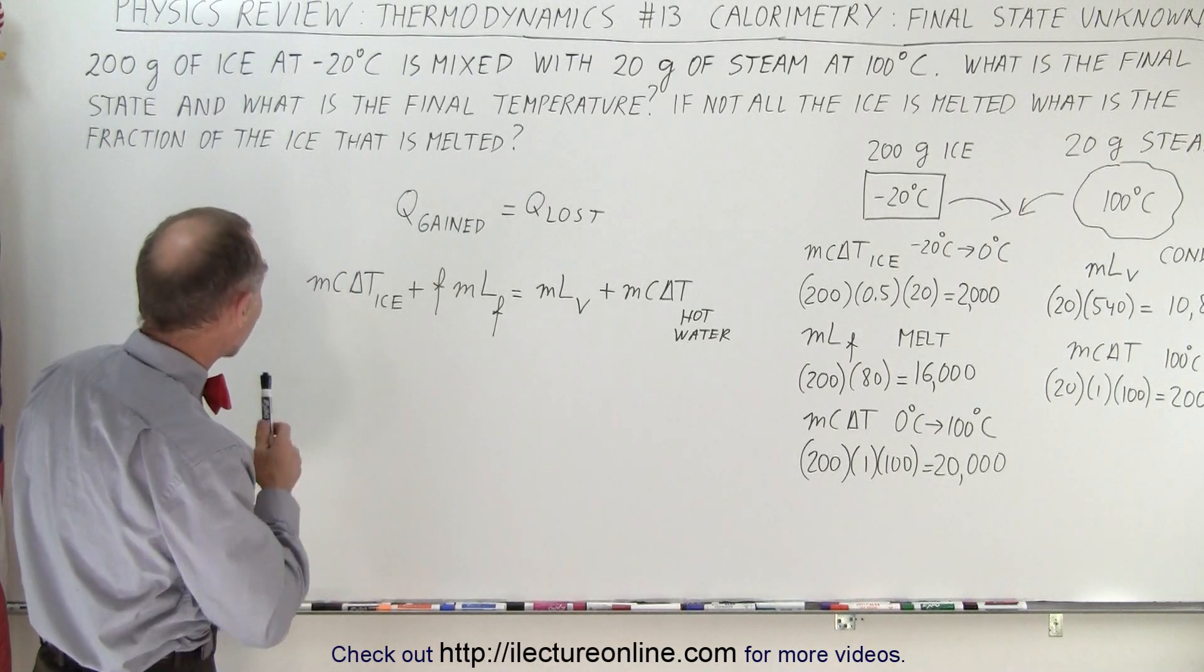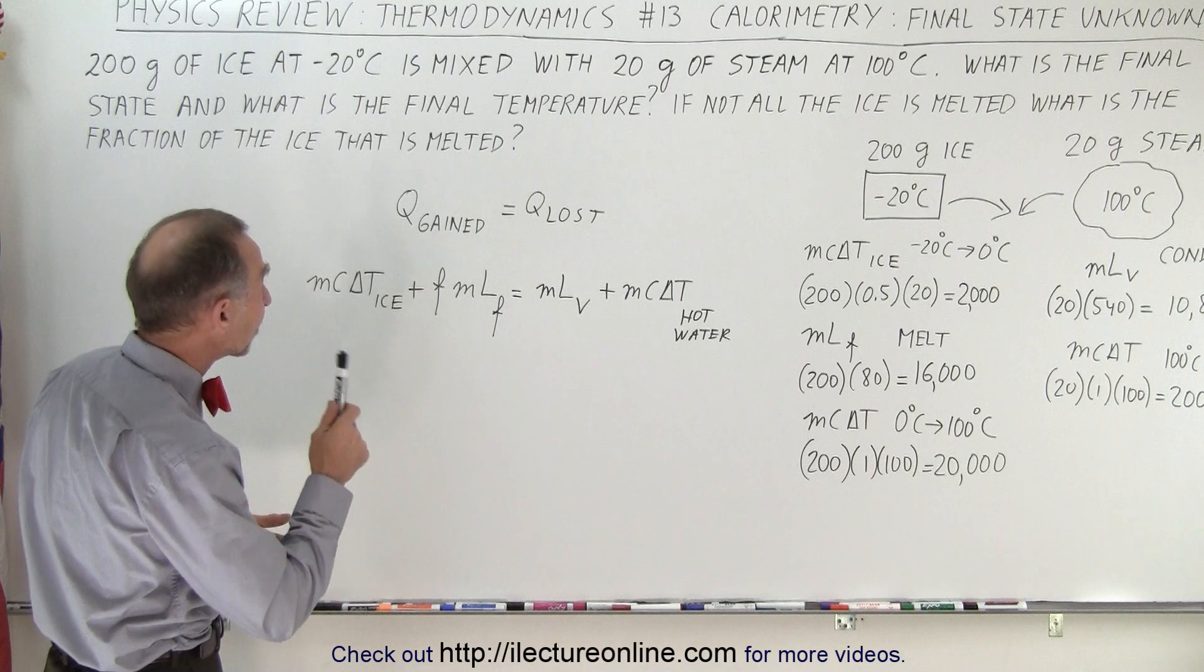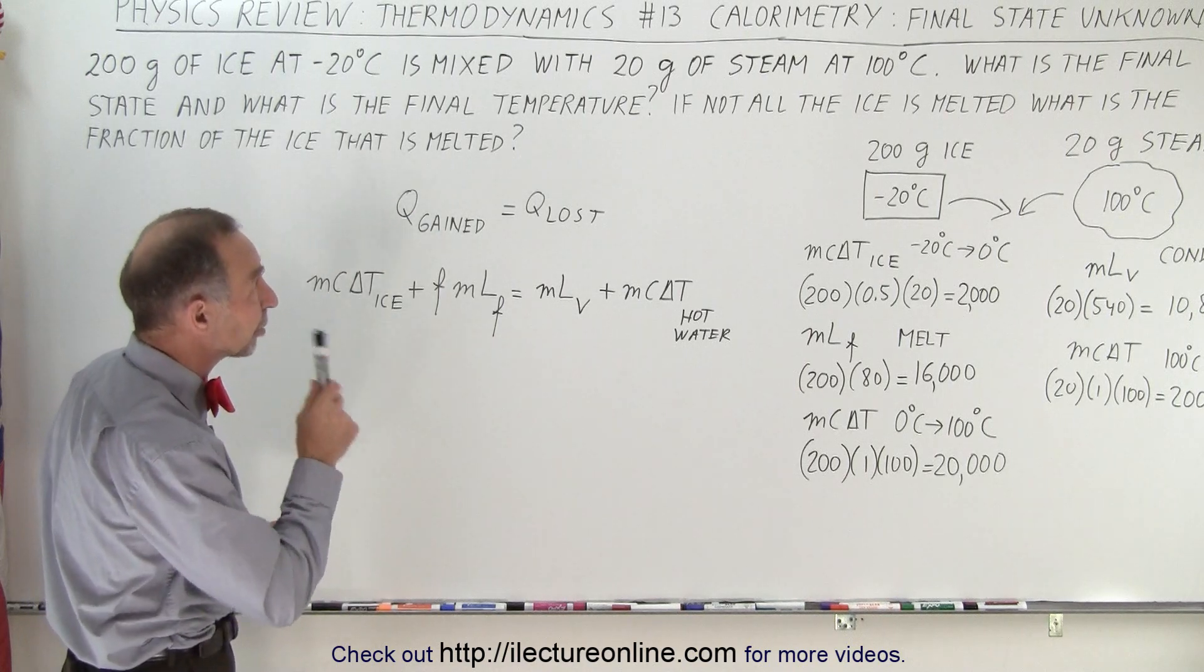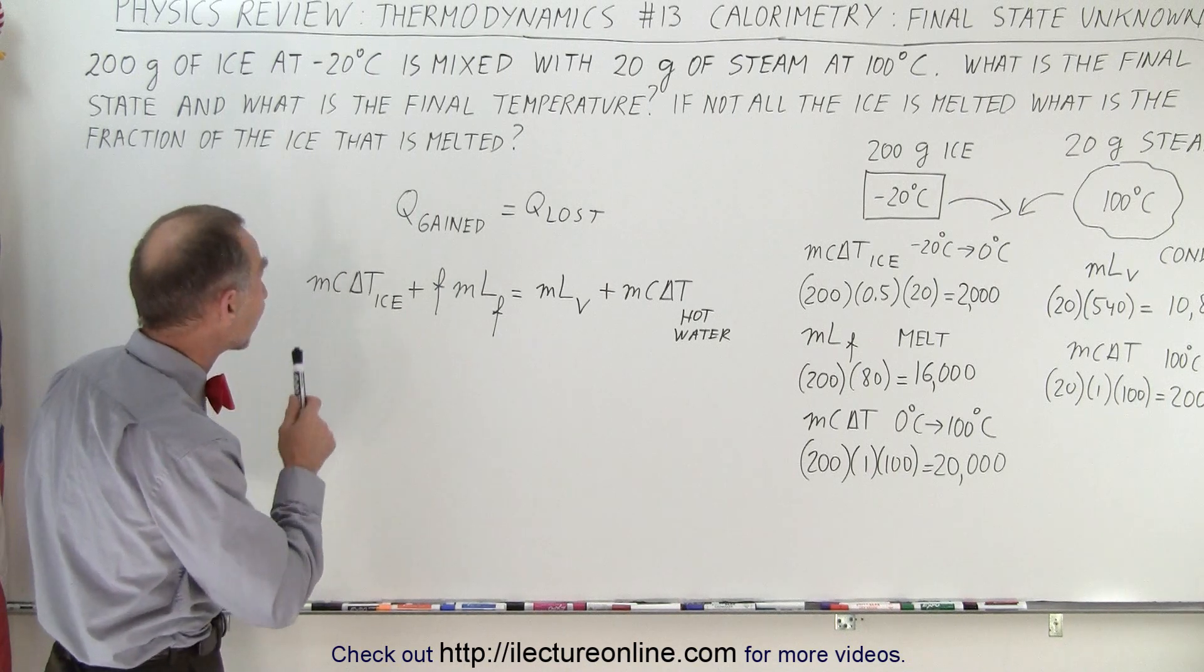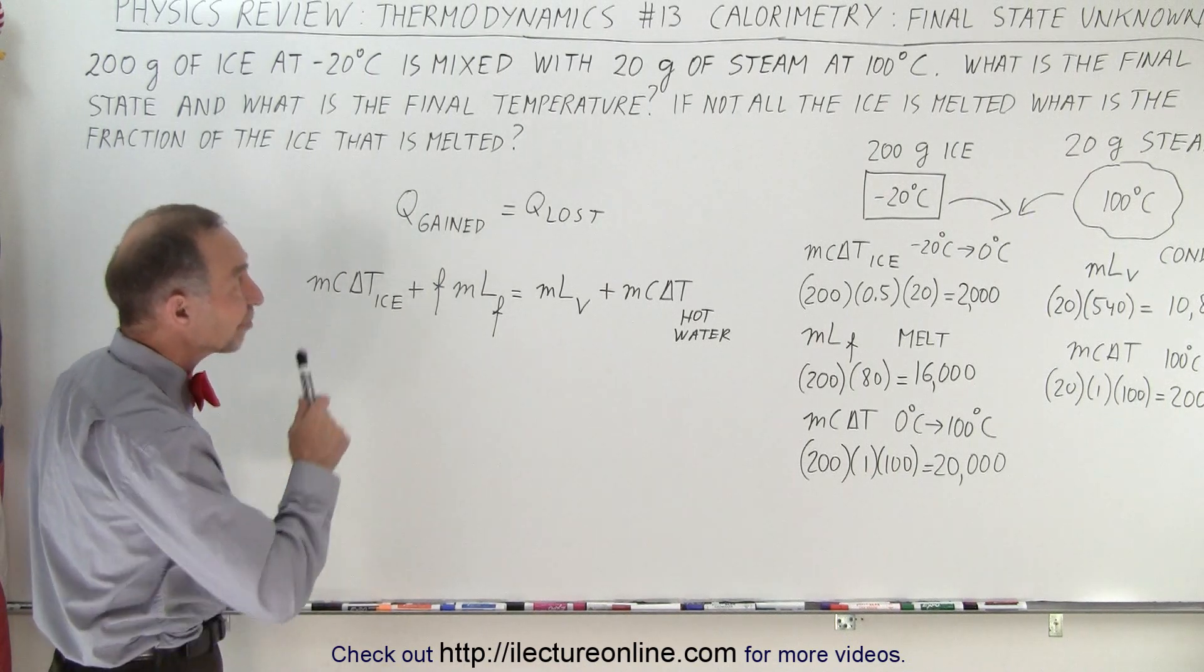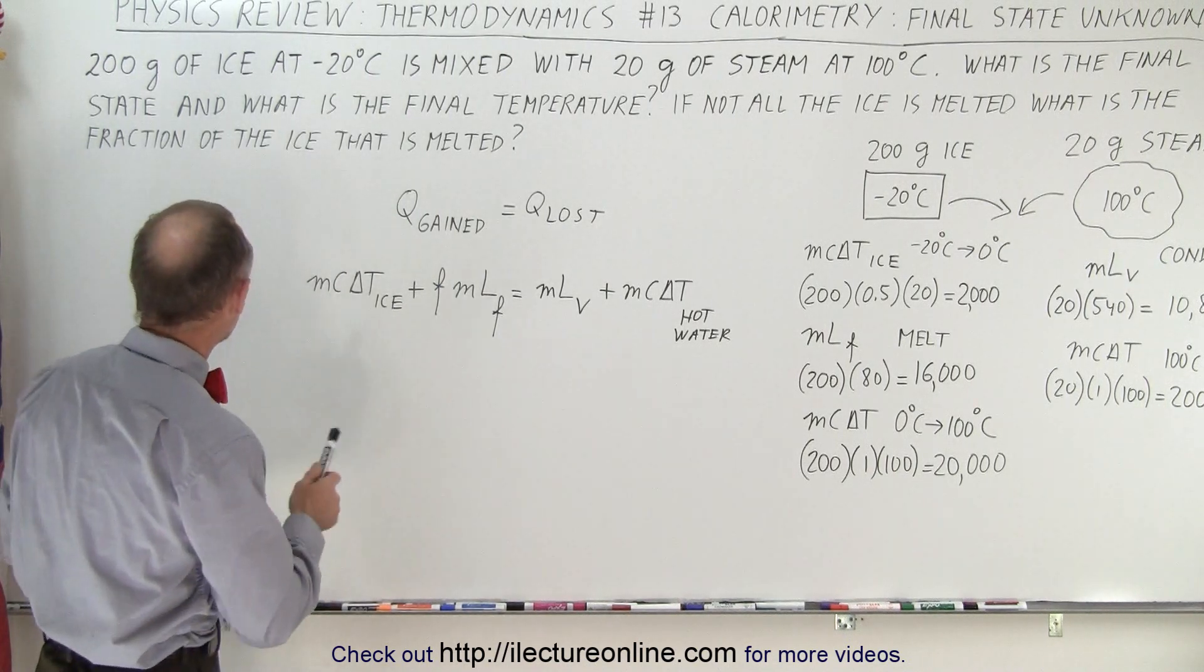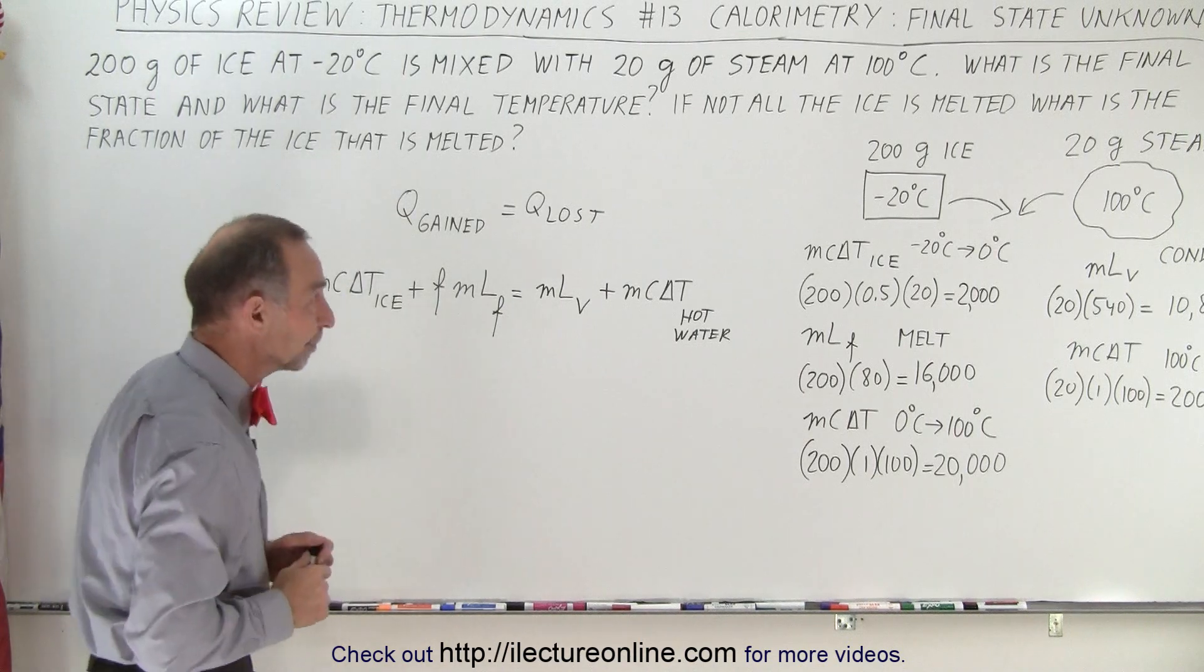We have 200 grams of ice at minus 20 degrees Celsius, and it's mixed with 20 grams of steam at 100 degrees Celsius. What is the final state and what is the final temperature? And if not all of the ice is melted, what is the fraction of the ice that is melted?